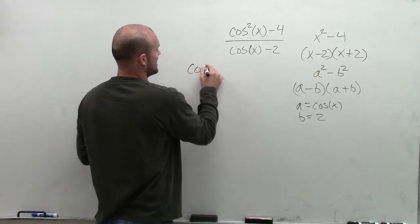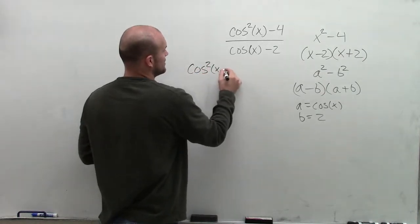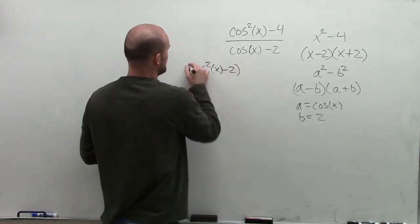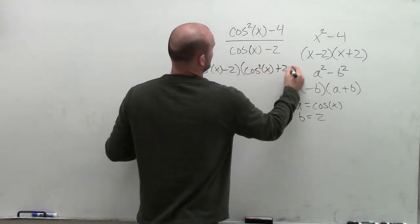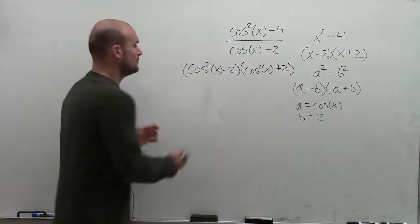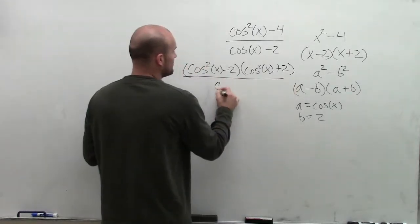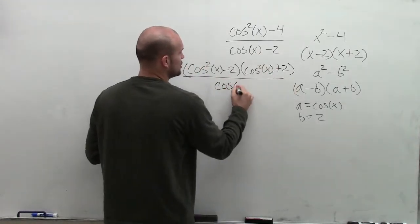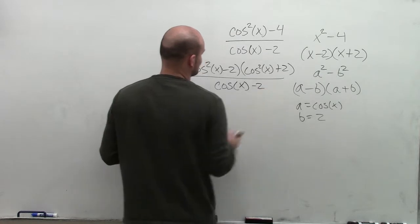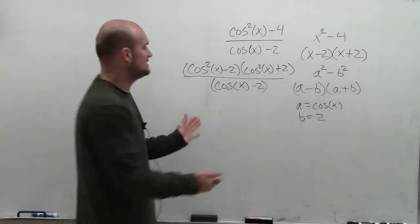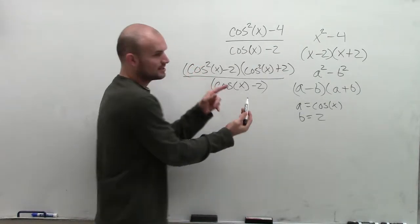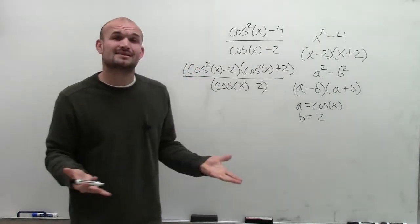Therefore, up top, I can rewrite this as cosine of x minus 2 times cosine of x plus 2. So now I rewrote that on the top, and then on the bottom I'm still going to have my denominator, which is cosine of x minus 2. Now I'm going to put these into parentheses so that you can see that these two terms, these two binomials, are exactly the same.